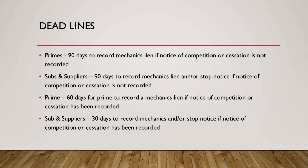If a notice of completion or cessation has been recorded, a prime has 60 days to record a mechanics lien. Subs and suppliers have 30 days to record a mechanics lien or stop notice if the notice of completion or cessation has been recorded. To summarize: the 90-day window applies when the notice has not been recorded, while the 60-day window for primes and 30-day window for subs applies when it has been recorded by the client, lender, or bank.